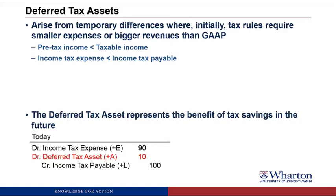The way the journal entry would look is we debit income tax expense — let's say 90 for income tax expense. We know that's less than income taxes payable, so we credit income taxes payable for 100. To get this to balance, we create a deferred tax asset of 10. That represents the fact that we paid more taxes to the government today, but those extra payments are going to get us tax savings in the future.